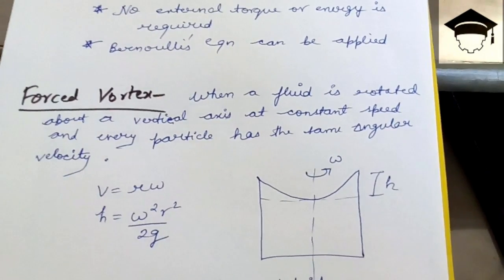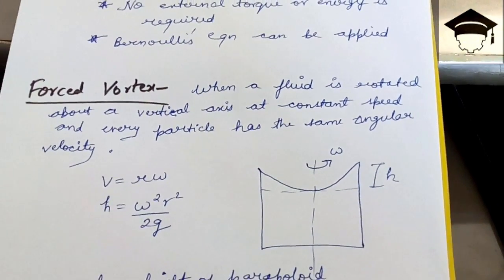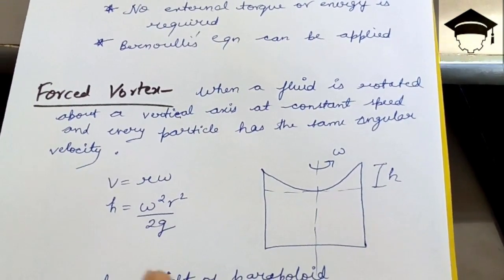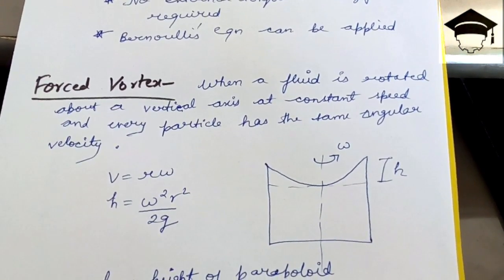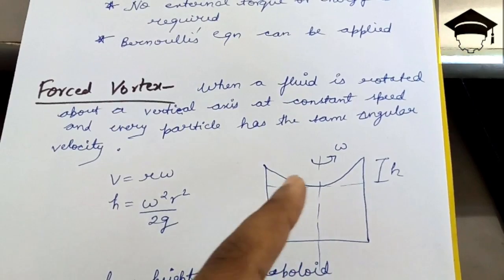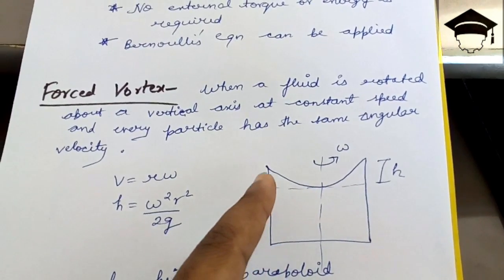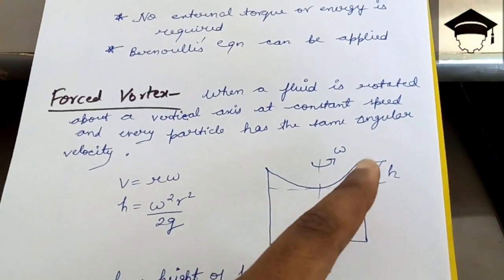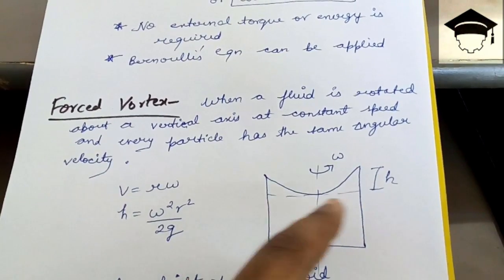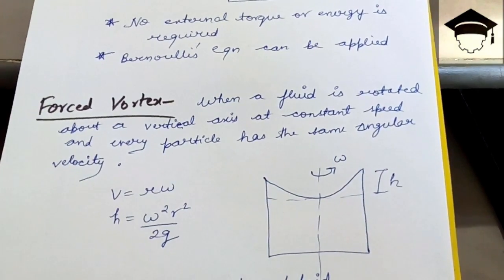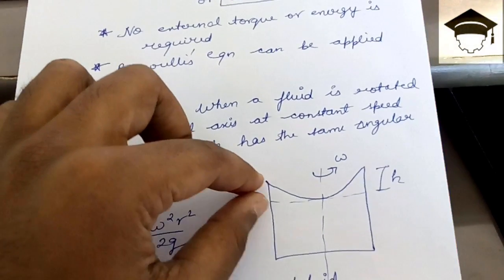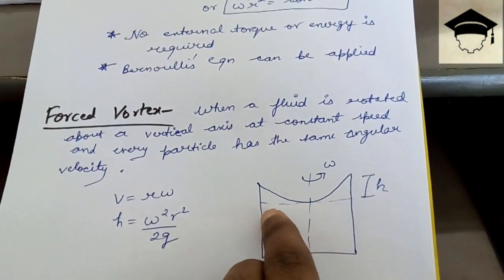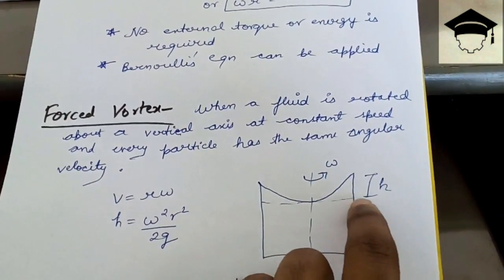When the fluid undergoes forced vortex motion, there is a depression at the center and a rise at the ends, forming a concave surface. The height h at which the fluid rises — initially the fluid level was at the dashed line, but after rotation it rises to h at the ends — is given by h equals ω²r²/2g, where h is the height of the paraboloid.